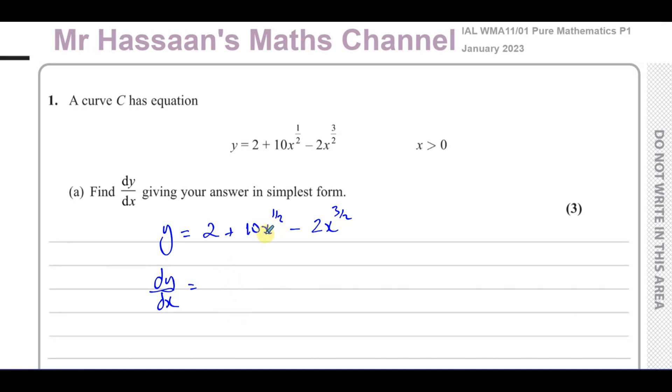Generally, when you have an x term, the power is multiplied by the coefficient first, so a half times 10, which is 5, and then we take 1 from the power. So a half minus 1, which is negative 1 half. A half take away 1 is the same as a half take away 2 over 2, which is minus 1 over 2.